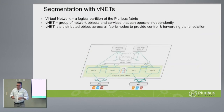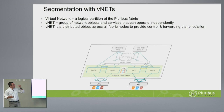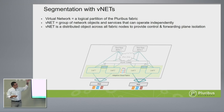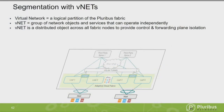Segmentation: a virtual network is a logical partition of the Pluribus fabric. We do this through the concept of vnet — short for virtual network. The vnet's job is to group network objects. I keep using the language 'objects' — a VLAN is an object, a VRF is an object.